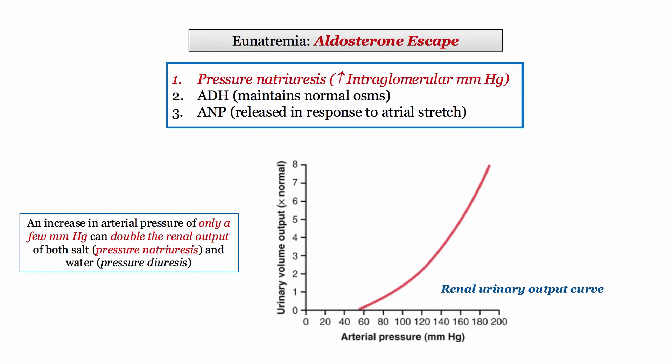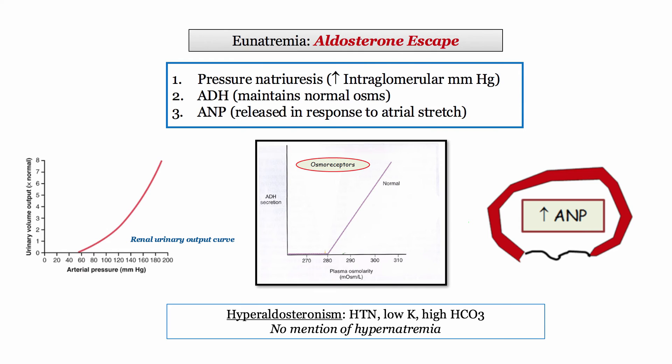An increase in arterial pressure of only a few millimeters of mercury can markedly increase the renal output of both salt and water — the kidney literally escapes the horror of the aldosterone elevation. The two other mechanisms involved in normalizing the sodium concentration include increased ADH secretion in response to rising plasma osmolarity, and release of natriuretic peptides in response to stretching of the cardiac chambers. These three mechanisms combine to regulate the plasma sodium concentration, and the process is referred to as aldosterone escape.